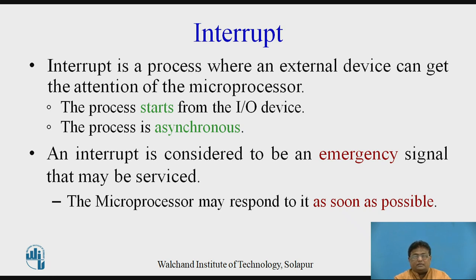In the interrupt mechanism, whenever any external device requires some sort of service from the microprocessor, the device will interrupt the microprocessor by sending a particular signal. When the microprocessor finds this interrupt signal, it will provide the required service to that particular device. An interrupt is considered to be an emergency signal that may be serviced as soon as possible.